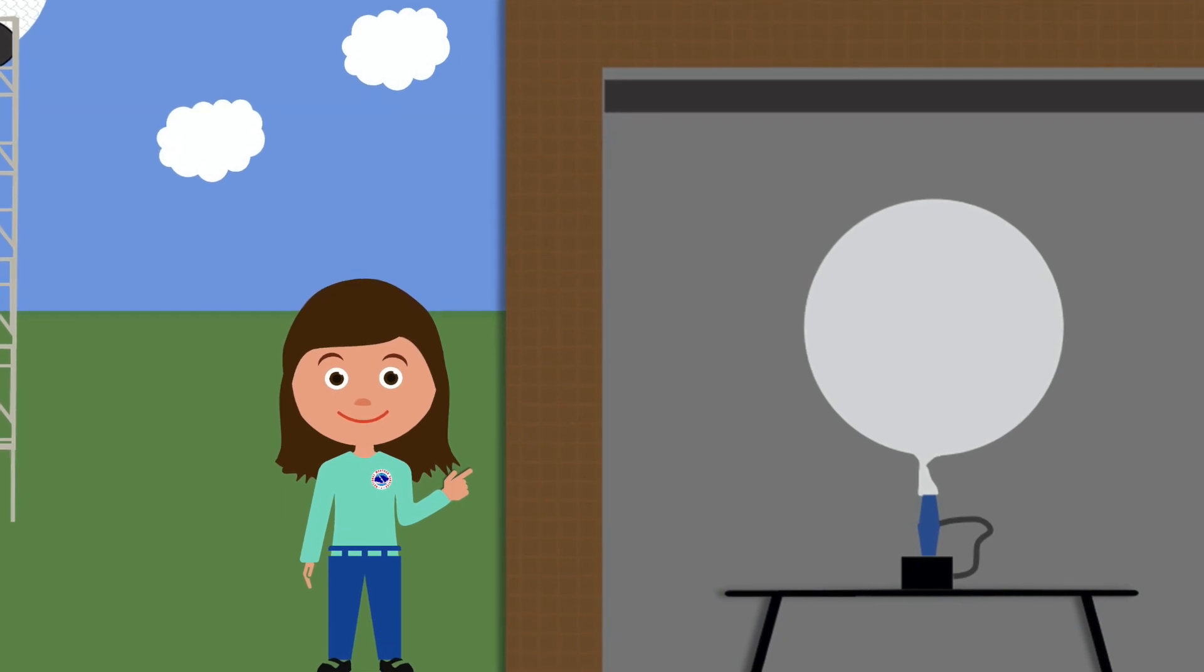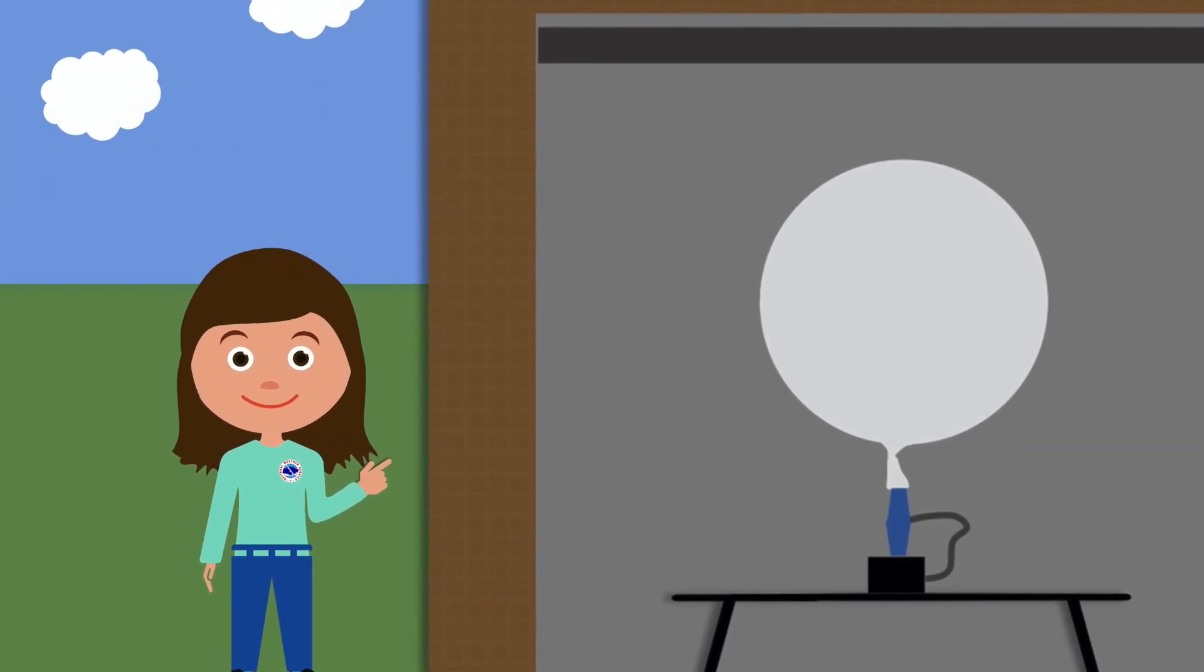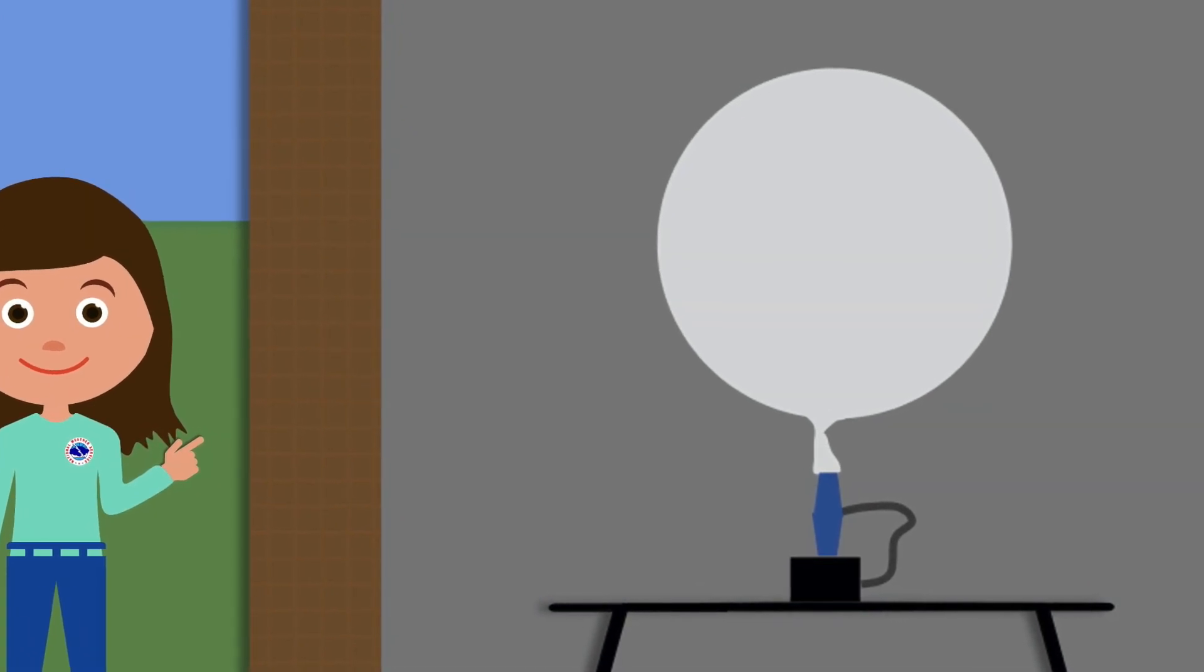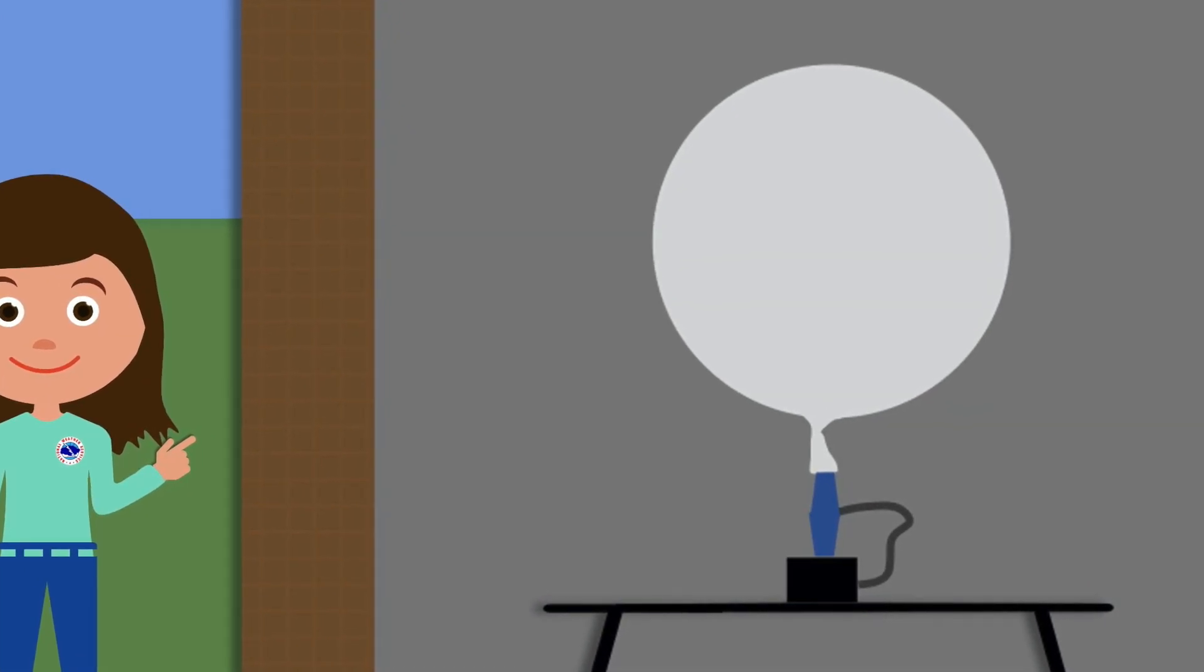See this big balloon? We send this balloon up into the sky two times a day every day of the year. We tie a string to the balloon and attach a weather instrument to it. It also has a parachute so it can come back down after it pops. Let me show you.